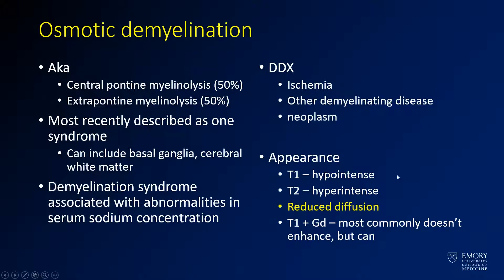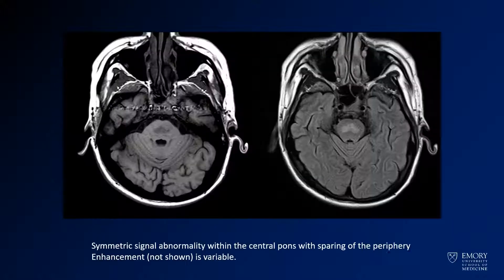For the imaging appearance, it tends to be T1 hypointense, T2 hyperintense, and have reduced diffusion. Most commonly there is no enhancement, although subtle enhancement would not be unusual. Here we see the case: there is a T1 hypointense region centrally within the pons. It's very symmetric and crosses the midline. Post-contrast images were not shown in this case, but it did not enhance.